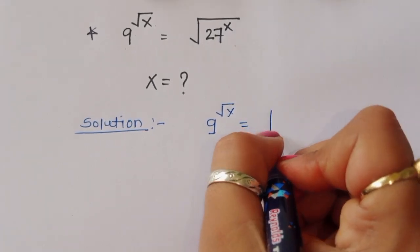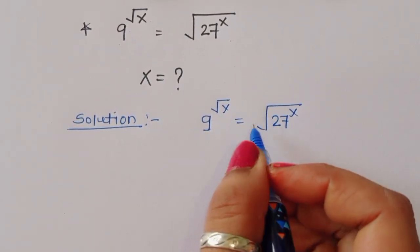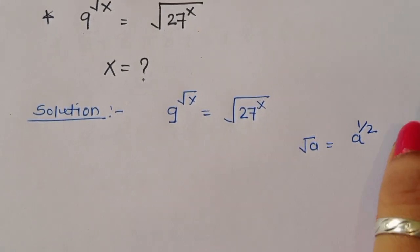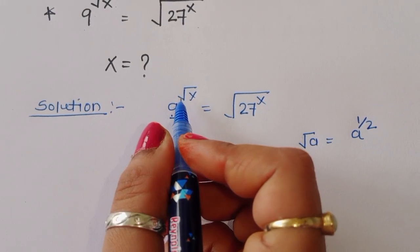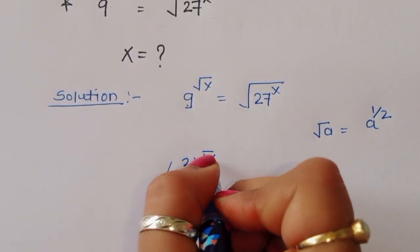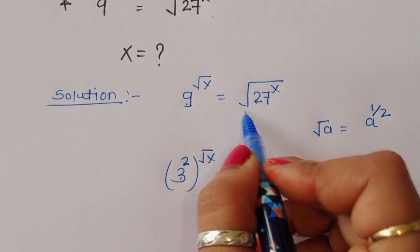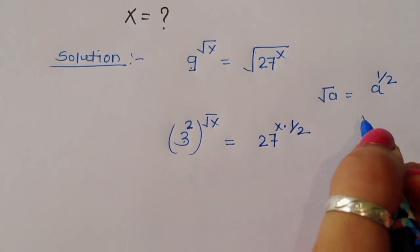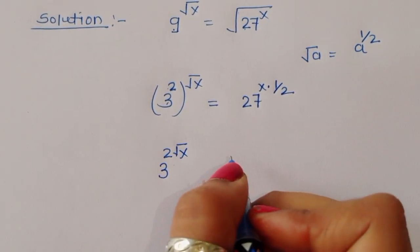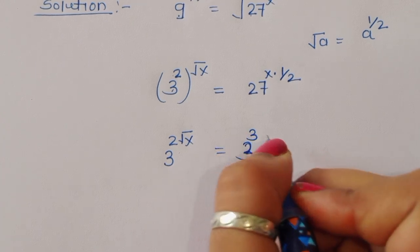We have 9^(√x) = √(27^x). We know that square root of a can be written as a^(1/2). Now 9 can be written as 3 squared, so we have (3²)^(√x) on the left. On the right, 27^x under a square root means 27^x to the power 1/2, and 27 is 3³, so we get 3^(3) on the right side.